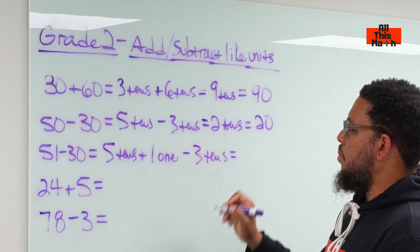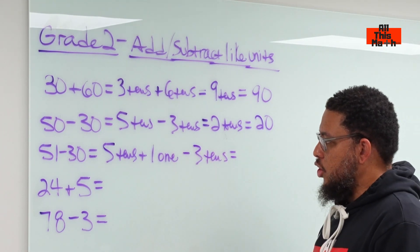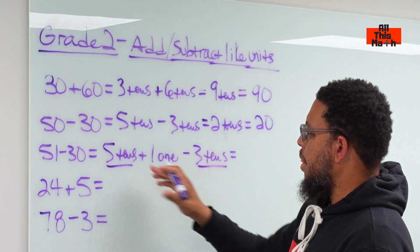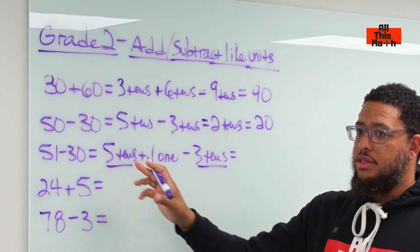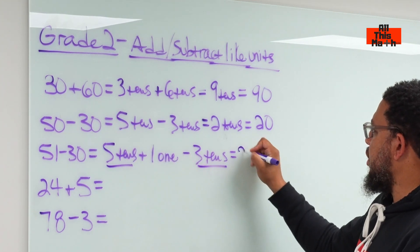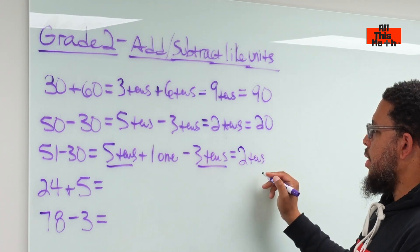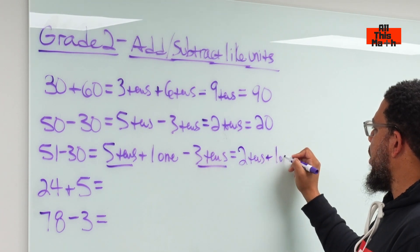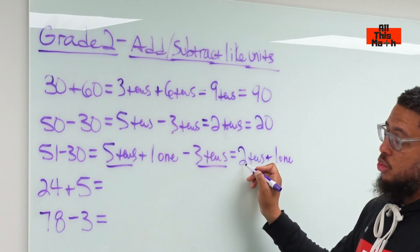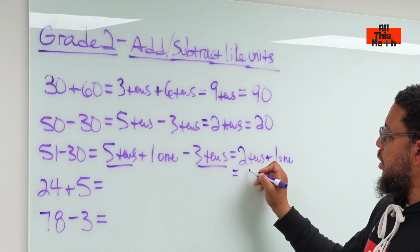Now here's where we get to talking about like terms and combining like terms. I'm going to put my tens together. I take away three tens from five tens, which leaves me with two tens like in the previous example. So this gives us two tens and one one. Two tens would be 20, one one is 1. So 20 plus 1 gives me 21.